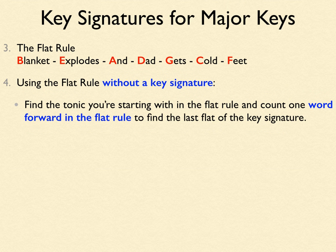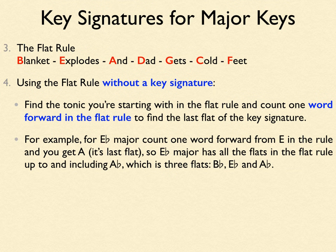How do we use the flat rule without a key signature? Find the tonic in the flat rule and count one word forward — that gives you the last flat of the key signature. For example, for E flat major: find E in the rule, count one word forward and you get A. So E flat major has all the flats up to and including A flat — three flats in total: B flat, E flat, and A flat. That's "Blanket Explodes And."